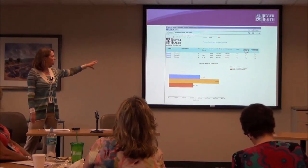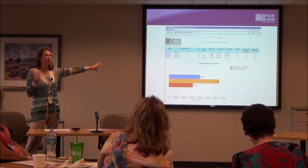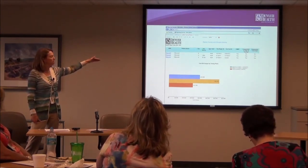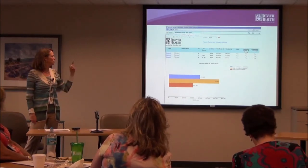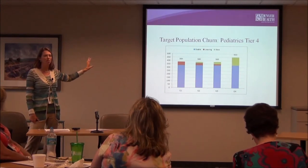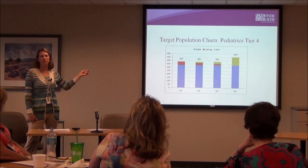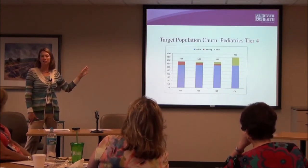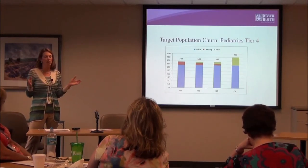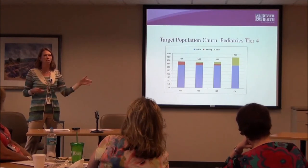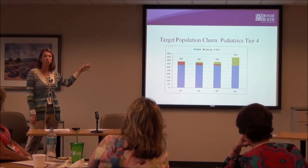Here's a patient-level detail view that can be used to decide if someone is a good candidate for care management, or to track spending and tier changes over time across the whole population. Our Tier 4 pediatric population is quite stable — the blue group remains in Tier 4 even as we rerun the algorithm. For adults, there's a lot more movement in and out of the tier, which has design implications if your program assumes constant or longitudinal contact with patients.